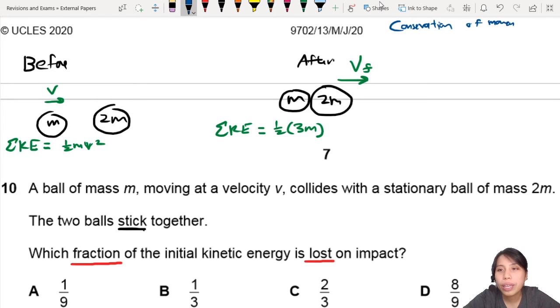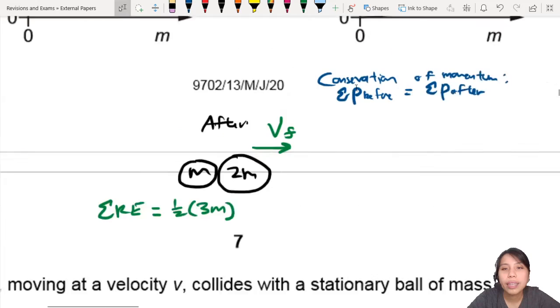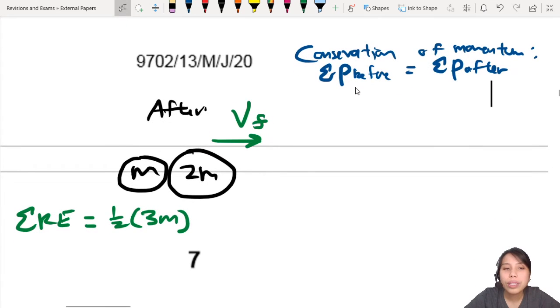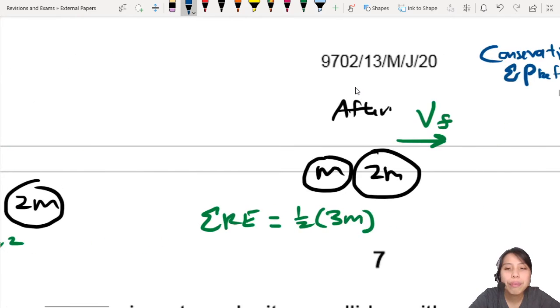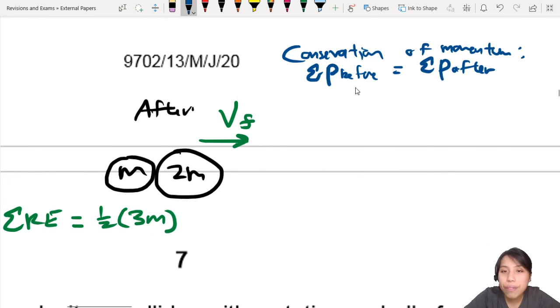I think we need to take a pause and calculate using conservation of momentum. What is VF? So on the top right there, I'm going to write out the working. Conservation of momentum means the total momentum before collision equals to the total momentum after a collision. So what's the total momentum before? Just one ball moving, right? MV is the total momentum before. After that, total momentum is 3M VF. So that means VF can be expressed as 1 over 3V.